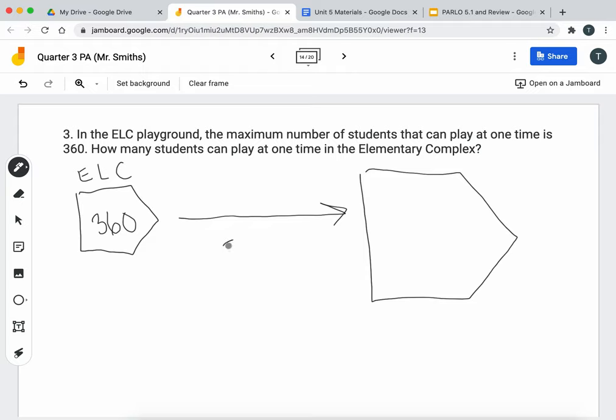So the scale factor we used was three. So I'm going to take 360, multiply it by three, and I'm going to get my answer.